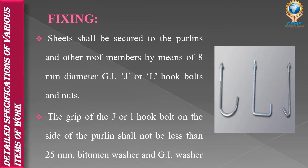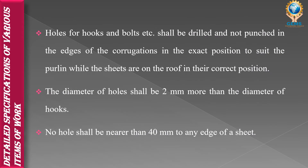The sheets shall be secured to the purlin and other roof members by means of galvanized iron (GI) J or L hook bolts and nuts. As seen in the image, these J or L hook bolts are used for fixing the sheets on the purlins. The diameter of the J or L hook bolt grip should be 8 mm, and the grip of the hook bolt on the side of the purlin shall not be less than 25 mm. The diameter of the hole shall be 2 mm more than the diameter of the bolt, and no hole shall be nearer than 40 mm. This is the fixing process.